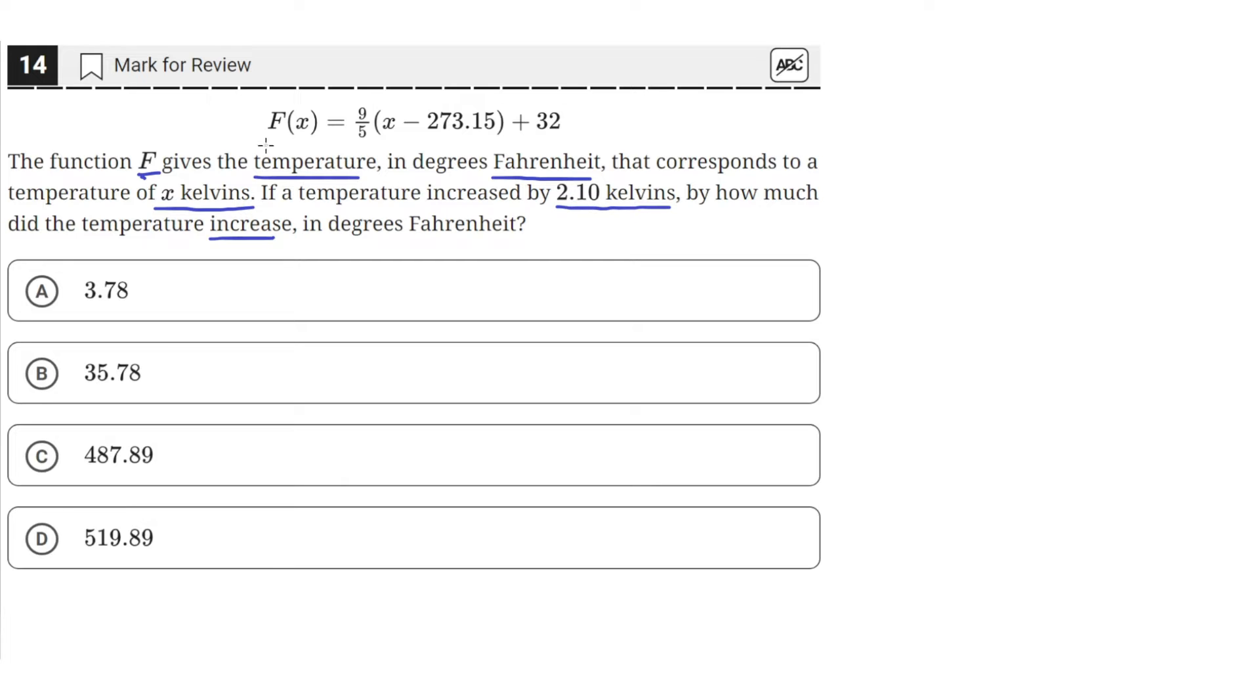So we have this function F that gives us the temperature in Fahrenheit as a function of the temperature in Kelvin, x. And the question is asking us how much would F of x increase if x increased by 2.1 kelvins?